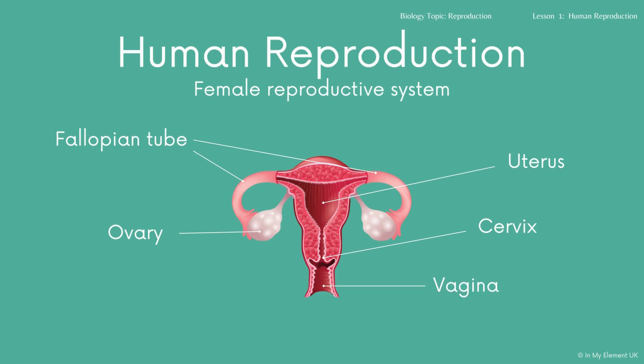The final part is the vagina. During copulation, that is where the sperm will enter — from the vagina into the uterus — and then they will move up to the fallopian tubes. Those are the main parts you need to know. If you've got two functioning ovaries, you will have an egg released from one one month, and then another one released the following month.